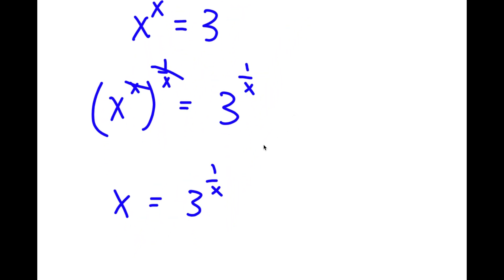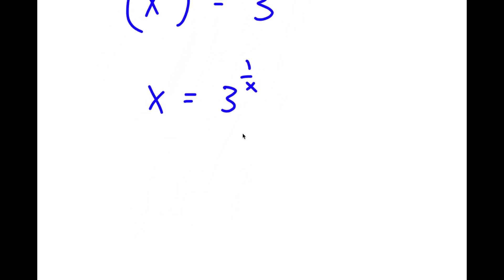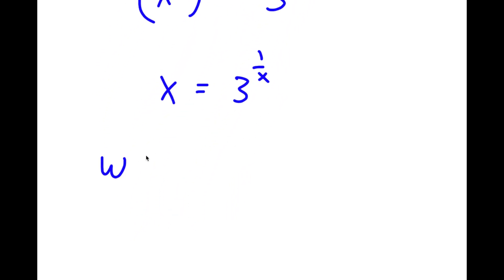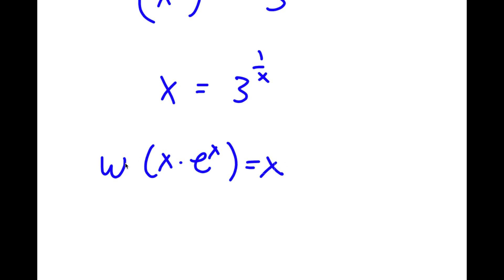Now, if I take the W Lambert function of something in the form x times e to the power of x, this is equal to x. So the W Lambert function basically says if I take the W Lambert function of something in the form x times e to the power of x, that's equal to x. In this case, I'm going to replace x with the W Lambert function.